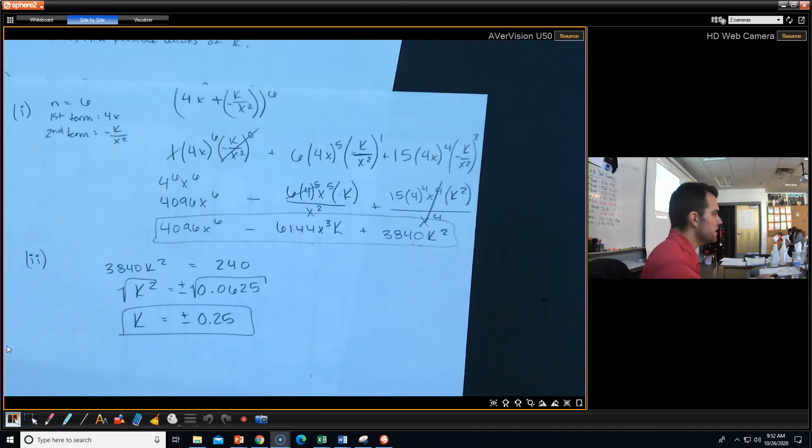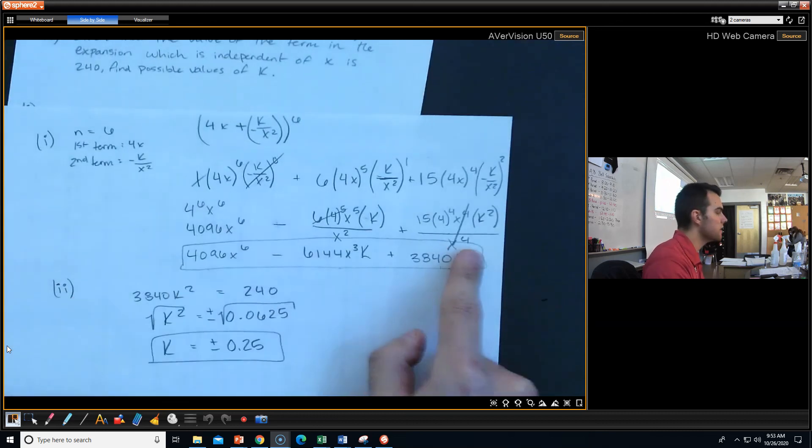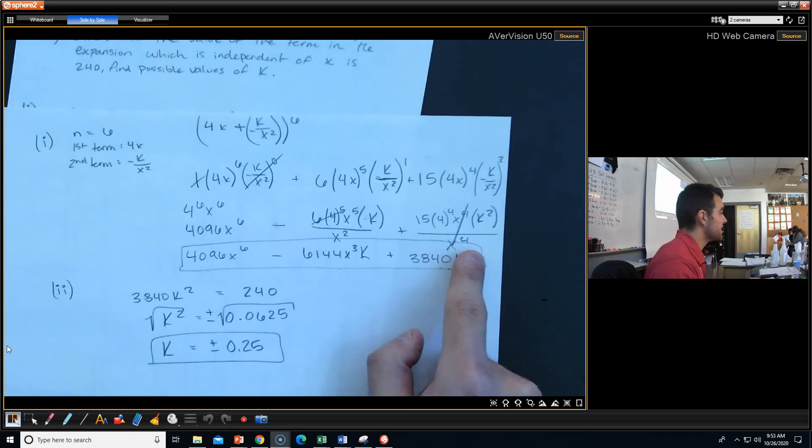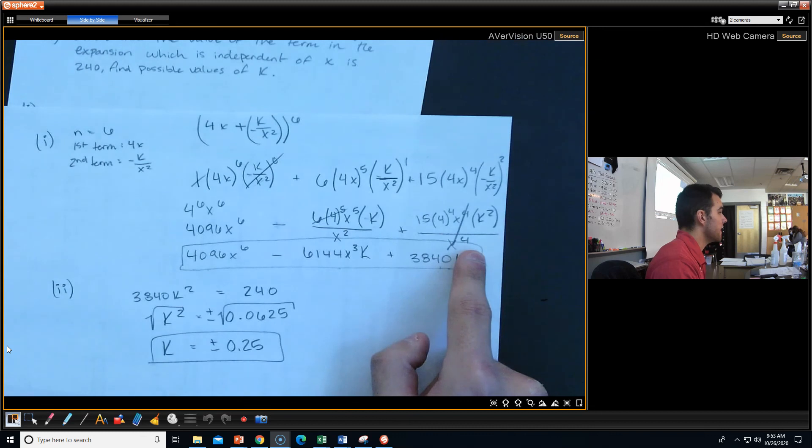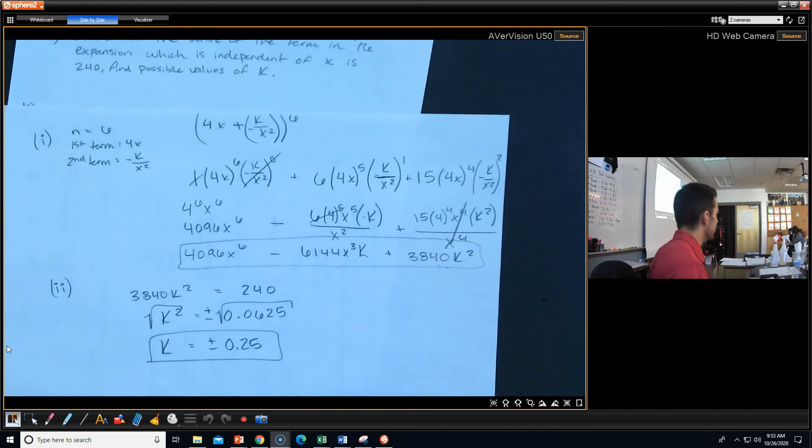And that's it. So a lot of these problems, the Cambridge problems, they boil down to writing out some terms and then solving for like a k value or finding different constants. They're not all going to look like this, of course, but again, if you use that pattern that we've been working with, it's going to take you a long way. This is Mr. Knight signing out. See you later.